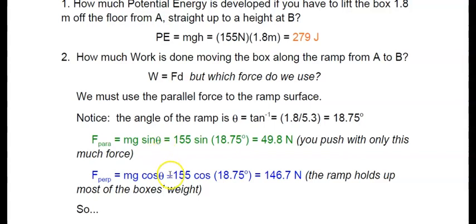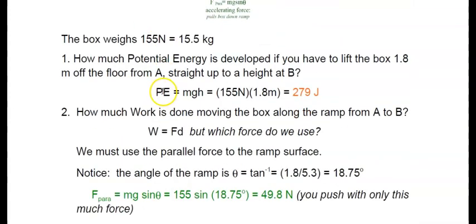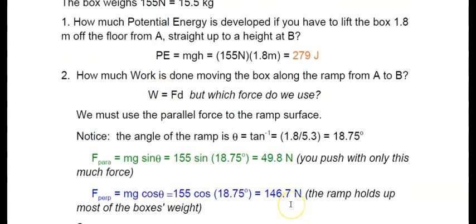And then of course the part of the ramp that holds the box up, known as the normal force, is equal to the perpendicular vector MG cosine theta, which is 155 cosine 18.75, which is 146.7 Newtons. Considering that the block weighs 155 Newtons, you can see that 146.7 of those Newtons are being assisted by the ramp surface itself.